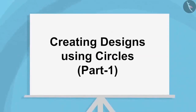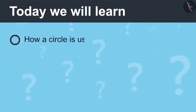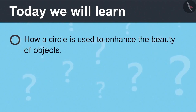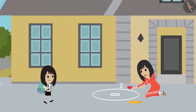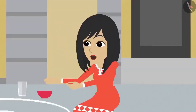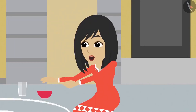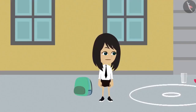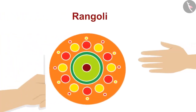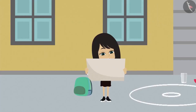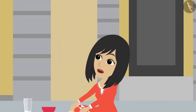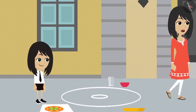Creating Designs Using Circles, Part 1. Today we will learn how a circle is used to enhance the beauty of objects. Mummy, what are you making? I am making a Rangoli. Come and help me — copy the design from this paper onto the ground with this chalk. There are many circles made in it. Can we make a Rangoli with circles? Yes, you can use any shape for the design and a circle is also a shape, so you can make a design using it.